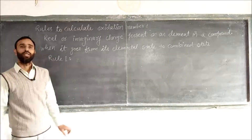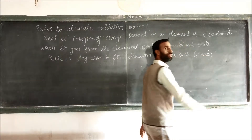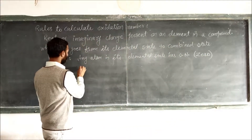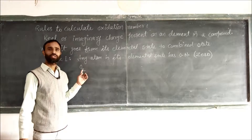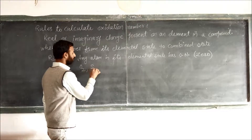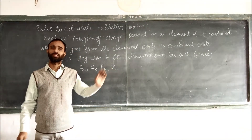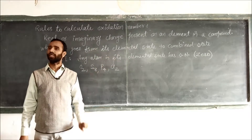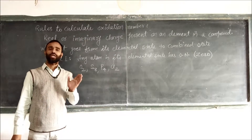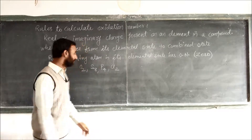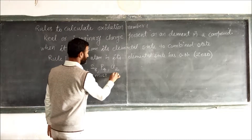Rule number one: any atom in its elemental state has oxidation number zero. For example, O2 is the elemental state of oxygen, so its oxidation number is zero. Similarly, S8, P4, and Cl2 are all elemental states, so any atom in its elemental state has oxidation number zero.